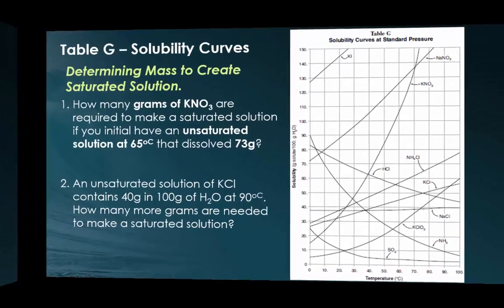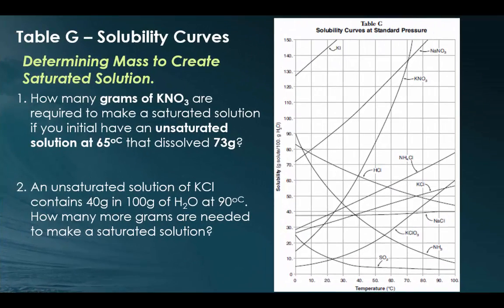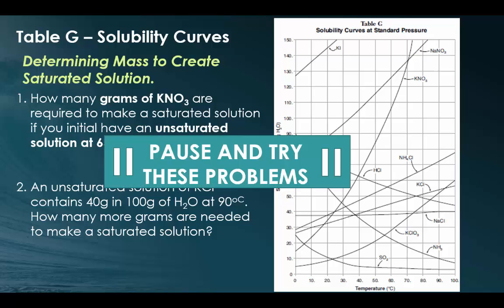So let's look at an example. In the first example, it says how many grams of KNO3 are required to make a saturated solution if you initially have an unsaturated solution at 65 degrees that dissolves 73 grams. Pause the video and try these out.